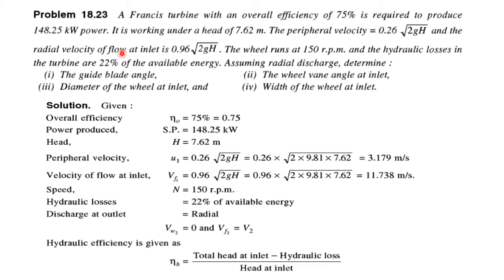This is an example of Francis turbine. A Francis turbine with an overall efficiency of 75% is required to produce 148.25 kilowatt power. It is working under a head of 7.62 meters. The peripheral velocity is 0.26√(2gh) and the radial velocity of flow at inlet is 0.96√(2gh). The wheels run at 150 rpm and the hydraulic losses are 22% of the available energy.